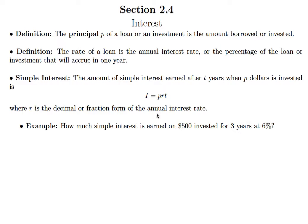A couple of vocabulary terms to start with. The principal, which we'll identify with the symbol P — the principal of a loan or an investment is the amount borrowed or invested. So if I invest $500, that's my principal. If I borrow $1,000, that's my principal.